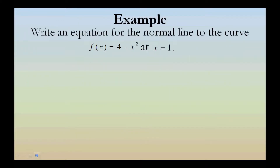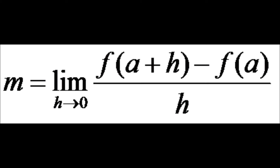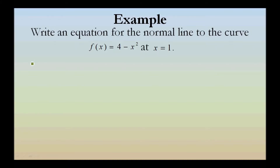An example: write an equation for the normal line to the curve f of x equals 4 minus x squared at x equals 1. For this problem, we're going to use the formal definition of a derivative. So we'll look at the limit as h approaches 0 of f of the quantity 1 plus h minus f of 1 divided by h.